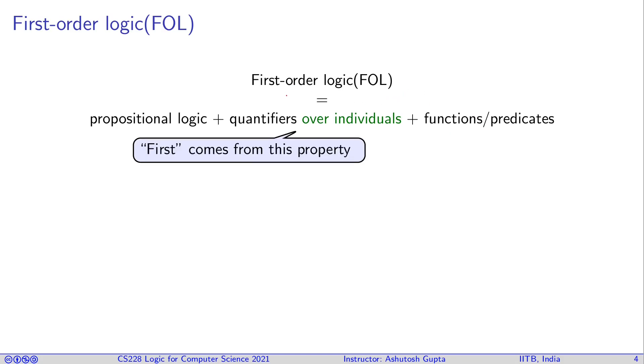One important thing to observe is there's a first word coming in logic, and that is because we are only allowed to quantify over individuals, not over sets of individuals. That's why this is called first-order logic.